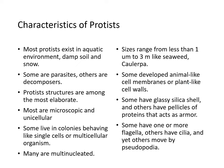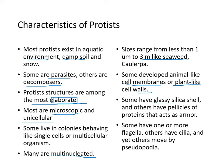Most protists exist in aquatic environments, damp soil, or snow; some are parasites, others are decomposers. Their structures are among the most elaborate, most are microscopic and unicellular, though some live in colonies or are multicellular. Many are multinucleated. Their sizes range from one micrometer to three meters like seaweed. Some developed animal-like cell membranes or plant-like cell walls; some have glassy silica shells, others have protein pellicles acting as armor.